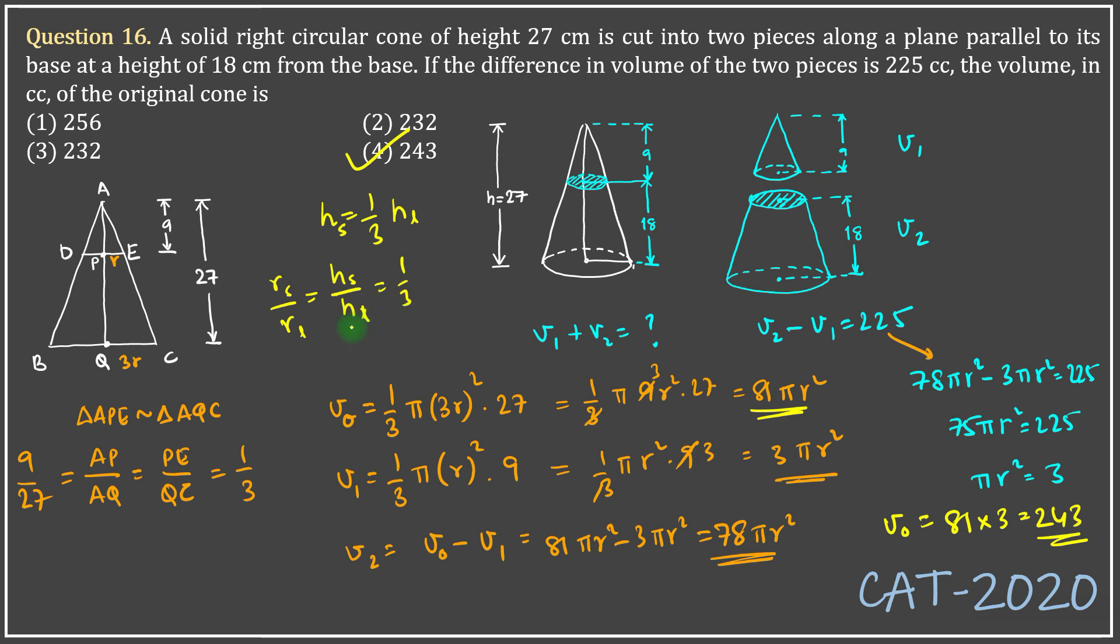And therefore using that logic, volume of smaller cone and volume of larger cone will be the cube, so 1/3 cubed is 1/27, which means that if the overall volume is 27x, then the volume of the smaller cone will be x, and therefore volume of the frustum will be 27x minus x, that is 26x. So the difference, that is 25x, is given to be 225, means x is 9. Therefore the volume of the entire cone, 27x, is nothing but 27 times 9 which is 243. Answer as fast as that.